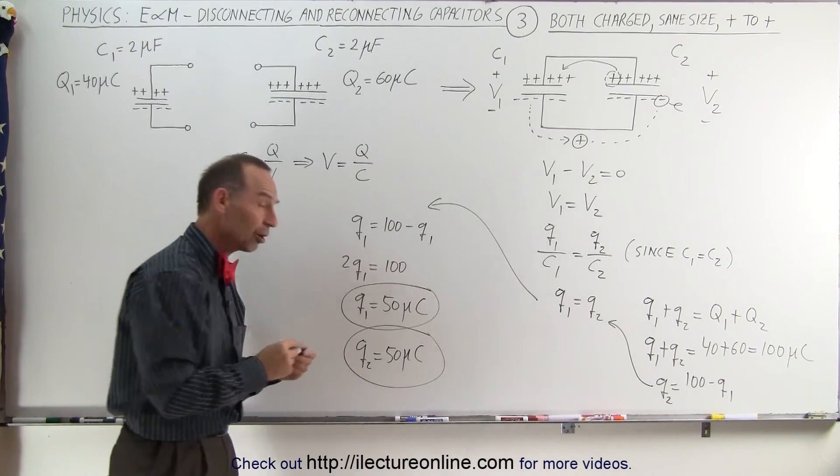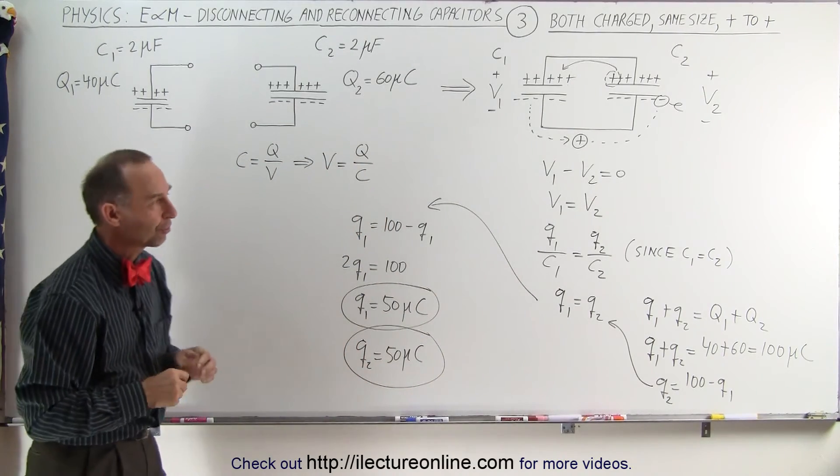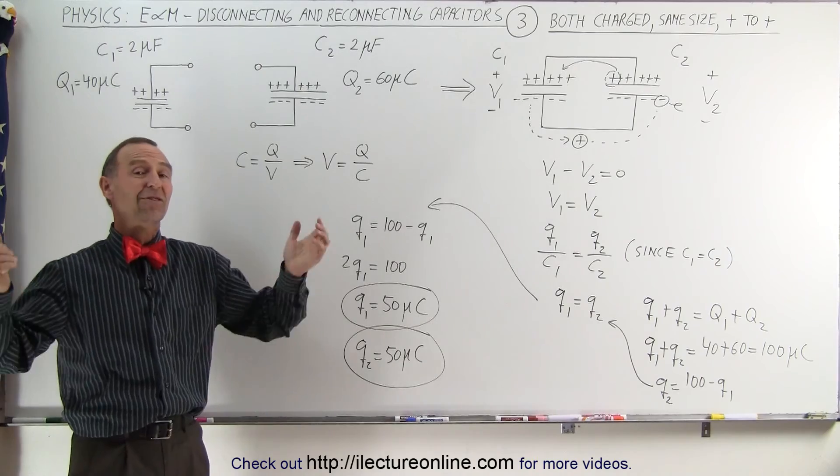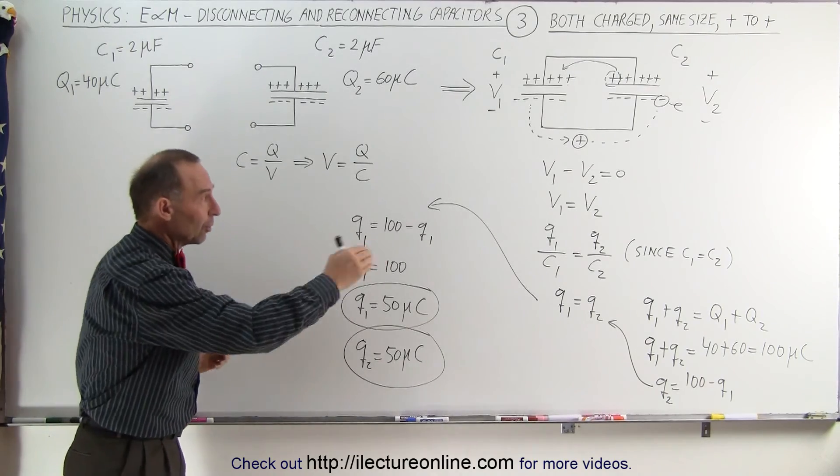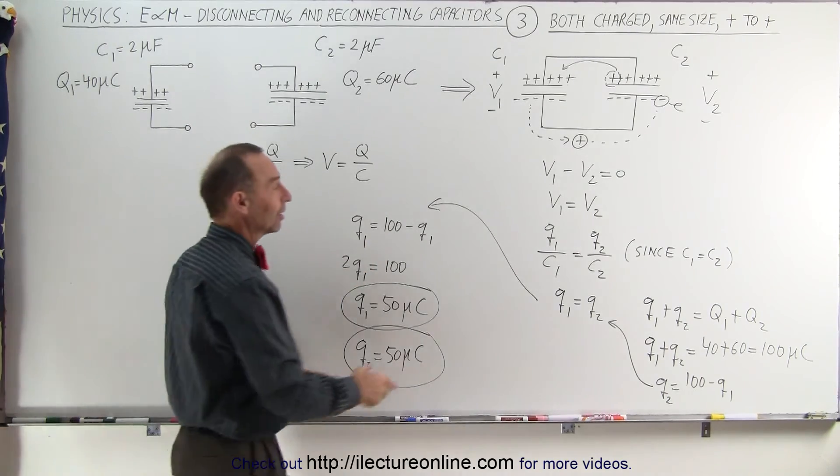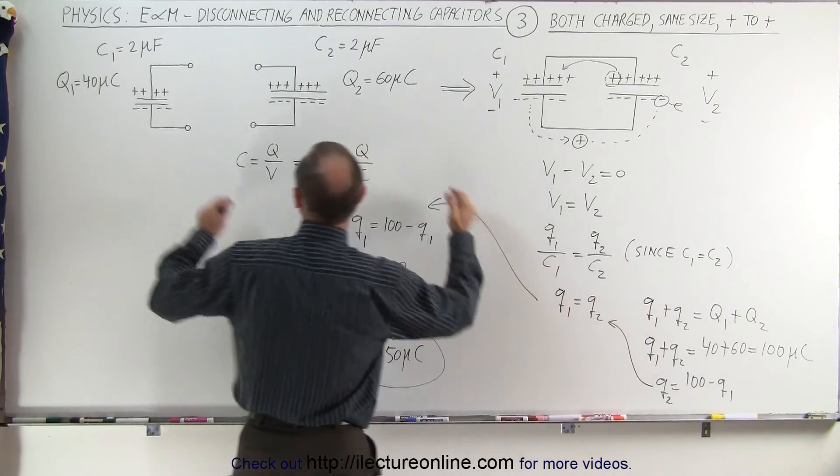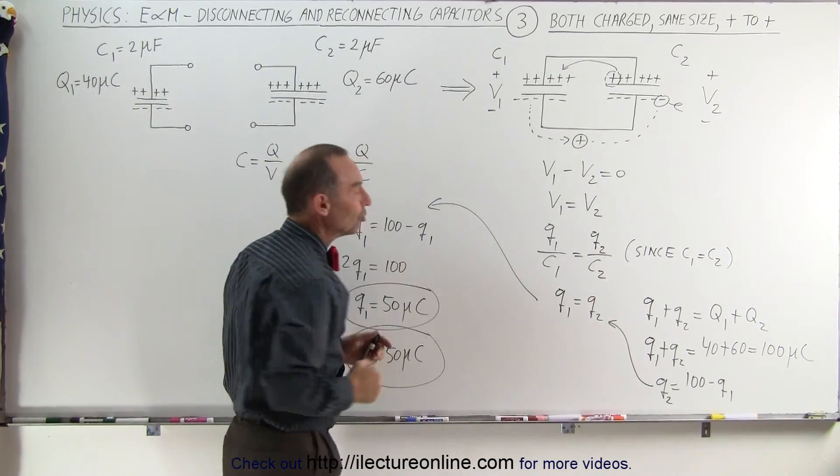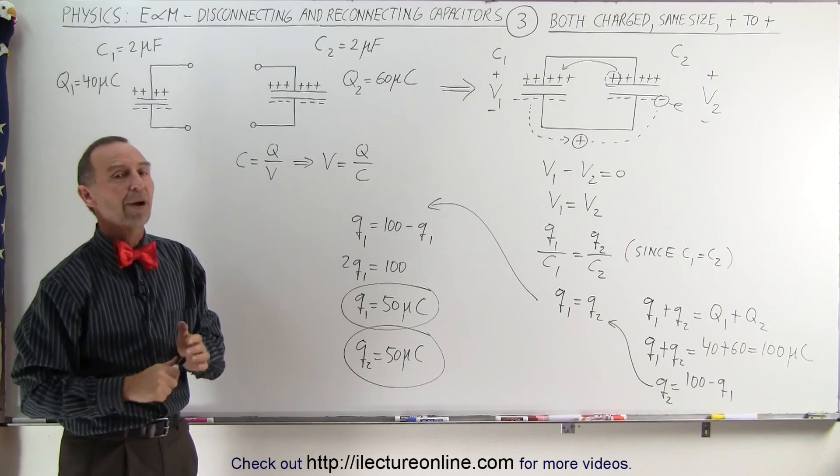And that's how we find the end charge on those two capacitors. Again, you may say, well, that's such an easy problem. Why do you bother with all that? Once you realize that they're equal to one another, and you know that the total charge was 100 microcoulombs, each should have 50. And you're absolutely correct.